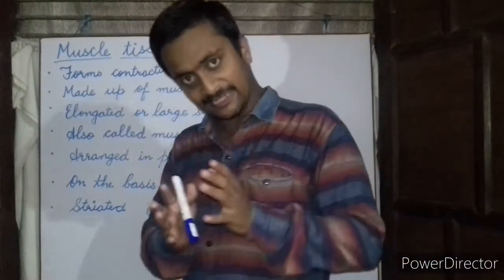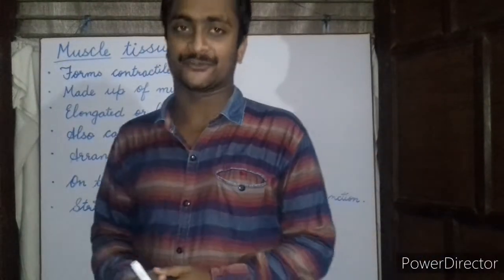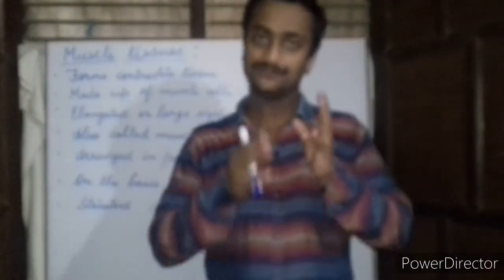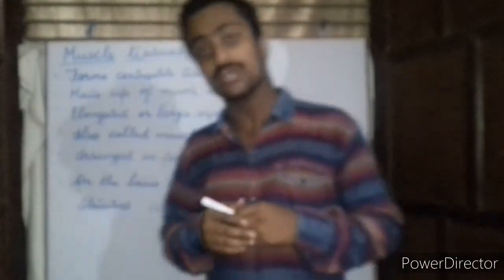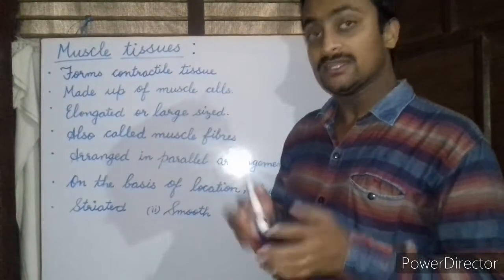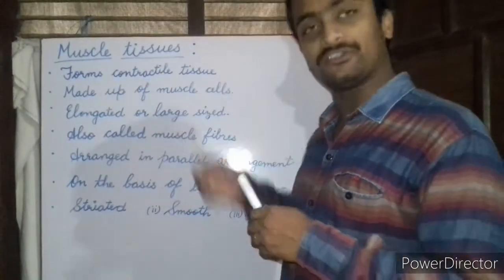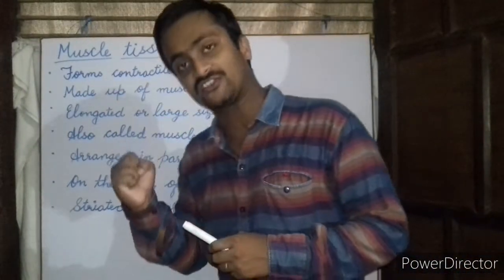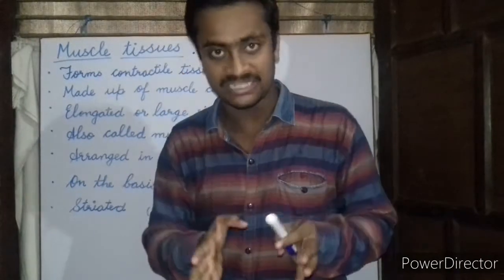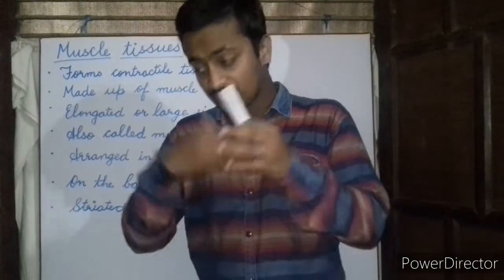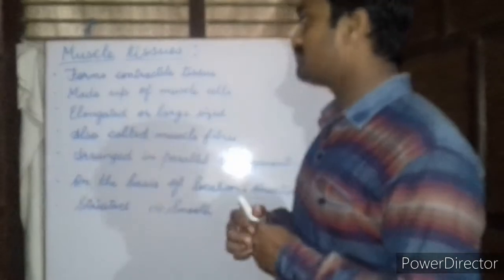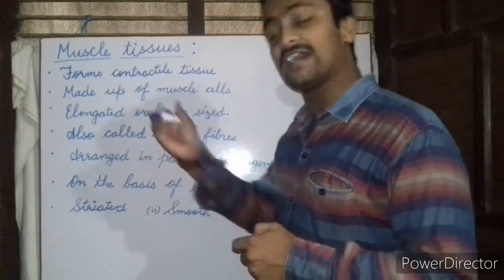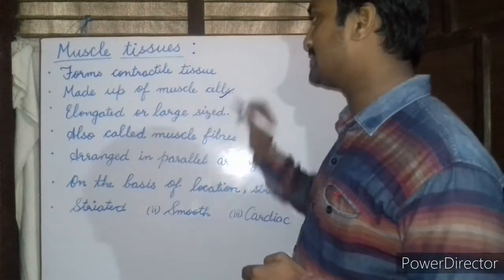Good afternoon students and welcome to today's lecture. Today we will be dealing with another type of animal tissues called the muscle tissues. These muscle tissues form the contractile tissues and help in the contraction and relaxation of muscles, which further helps in movement or locomotion. These muscle tissues are made up of muscle cells.